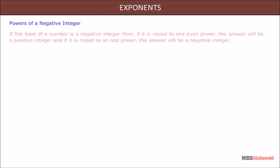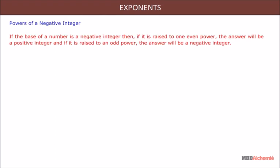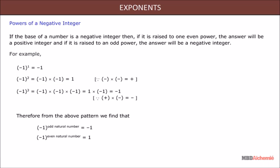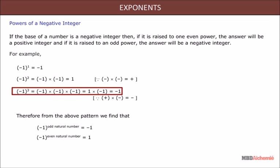Powers of a negative integer: if the base of a number is a negative integer, then if it is raised to an even power, the answer will be a positive integer, and if it is raised to an odd power, the answer will be a negative integer. For example, (−1)¹ = −1; (−1)² = (−1) × (−1) = 1; (−1)³ = (−1) × (−1) × (−1) = −1, and so on.